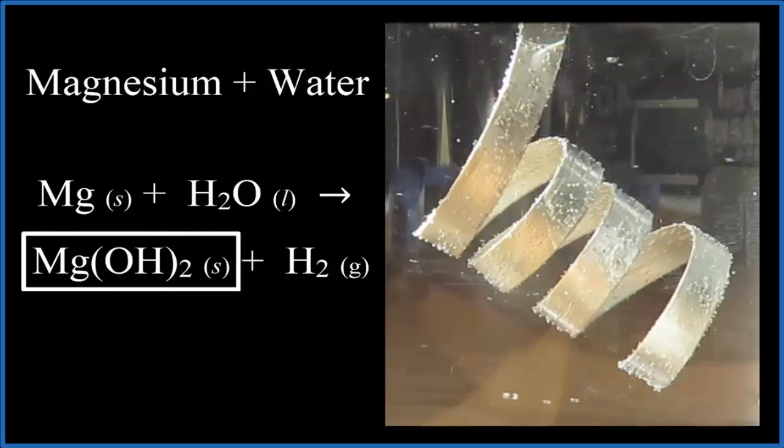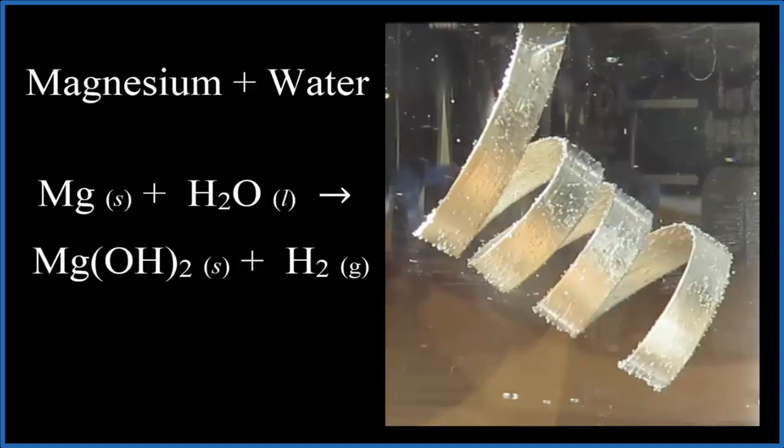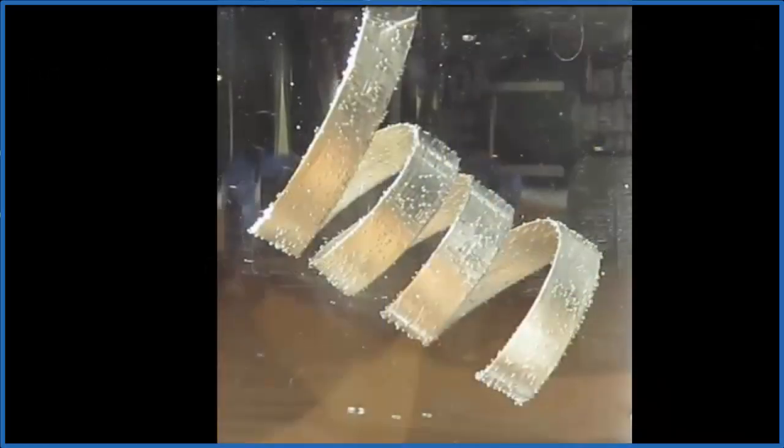The reaction is really slow though, because that magnesium hydroxide is a solid and it forms a layer on the magnesium that prevents the water from getting to the metal and reacting further. So this takes a while, but eventually that magnesium will react with the water and we'll have just the magnesium hydroxide.